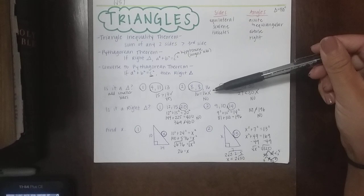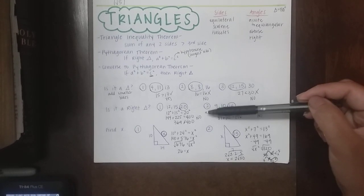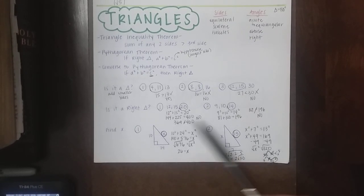So you've got to be able to tell me if it's a triangle, if it's a right triangle, and then if I give you a right triangle, you have to find the missing side using the Pythagorean theorem.